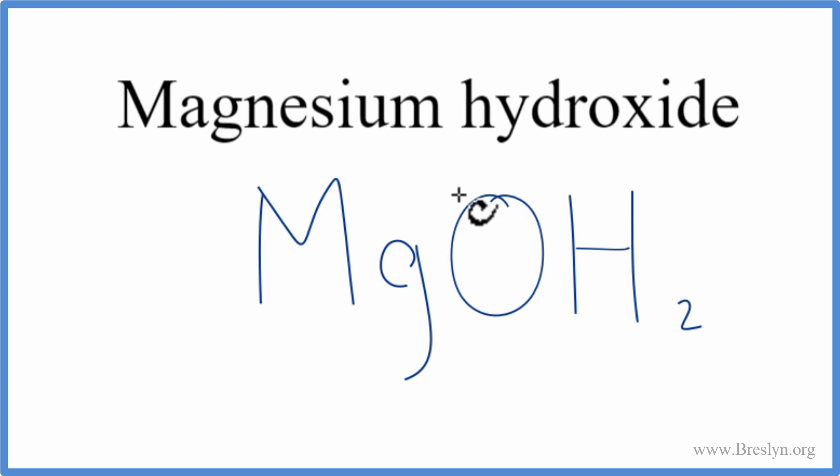And then we do need to put parentheses around our polyatomic ion, around the hydroxide ion. And that's the formula for magnesium hydroxide.